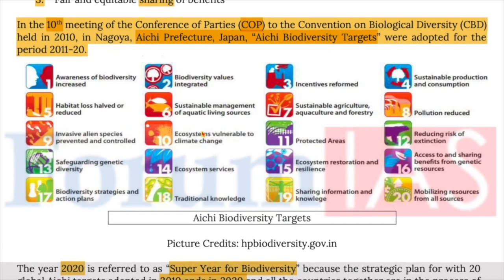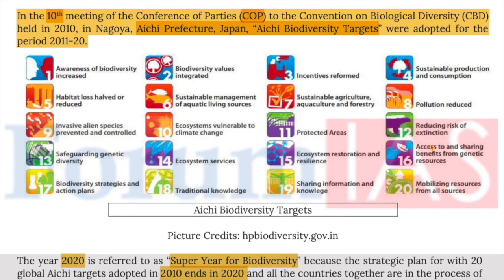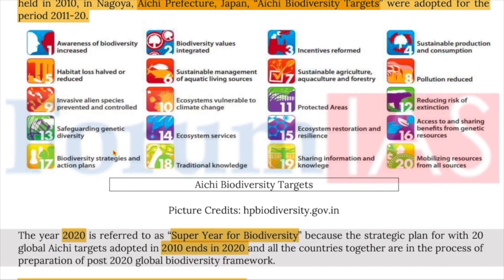There are 20 Aichi targets: awareness of biodiversity increased; biodiversity values integrated; incentives reformed; sustainable production and consumption; habitat loss halved or reduced; sustainable management of aquatic living resources; sustainable agriculture and forestry; pollution reduced; invasive alien species prevented and controlled; ecosystems vulnerable to climate change; protected areas; reducing risk of extinction; safeguarding genetic diversity; ecosystem services; ecosystem restoration and resilience; access and benefit sharing from genetic resources; biodiversity strategies and action plans; traditional knowledge; sharing information and knowledge; and mobilizing resources from all sources.